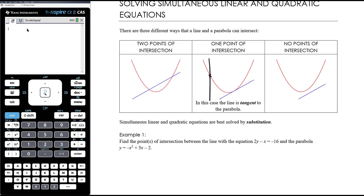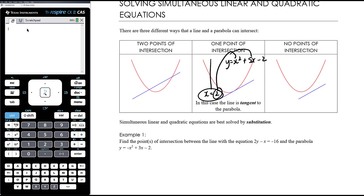A tangent is a line that just touches, just glances off the parabola. A vertical line wouldn't be an example of a tangent — that's a very trivial example. The equation of a vertical line is x equals a number. If you're solving a parabola like x squared plus 5x minus 2 intersecting with that, it's hardly simultaneous equations — you're just substituting 2 into the equation, just finding when x equals 2, what does y equal? That's really just finding a point on a graph, not genuinely solving simultaneous equations.